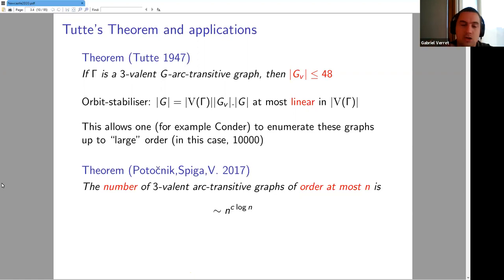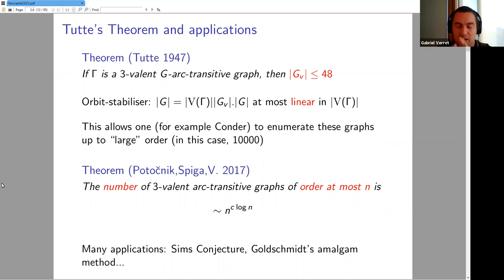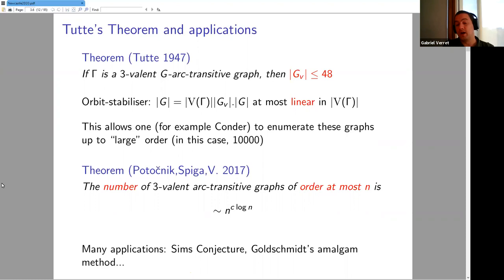At the other extreme, using results from Lubotzky about subgroup growth in finitely presented groups, you can bound the asymptotic number of such graphs — roughly n to the log n such graphs. There are also applications of the proof method itself. Simms read Tutt's proof and used the method to prove results about primitive groups of subdegree three, leading to his conjecture. Similarly, Goldsmith's Aschbacher–O'Nan–Scott method came from reading the proof.